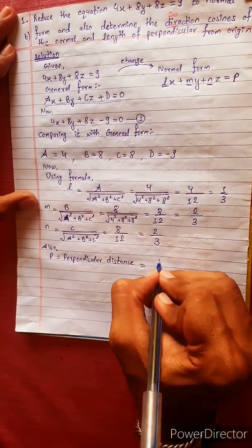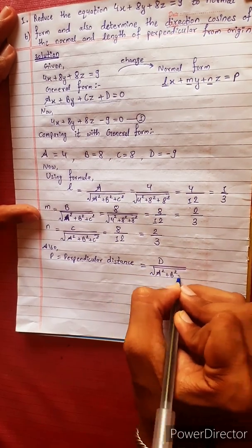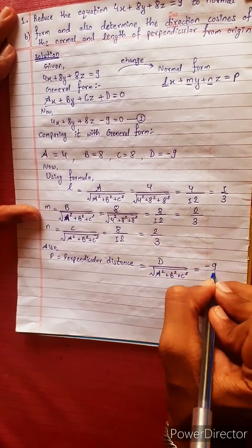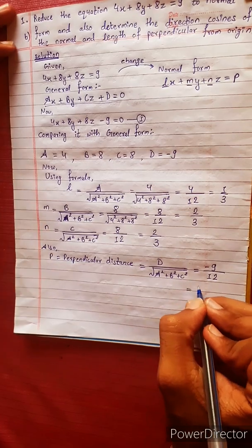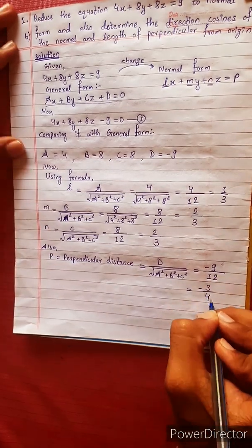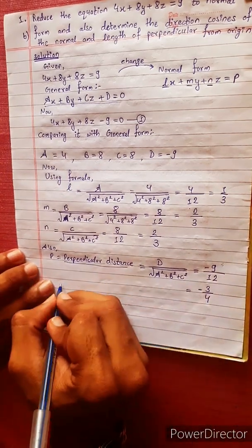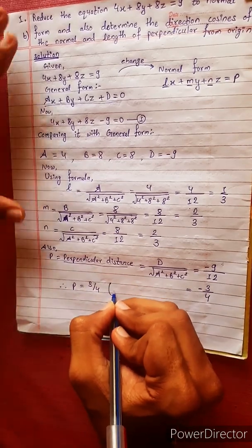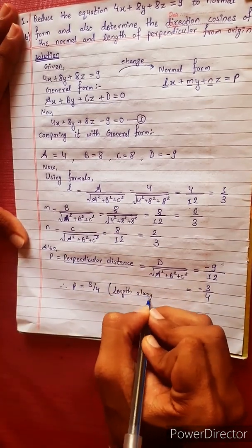The perpendicular distance formula is p = d divided by √(a² + b² + c²) = -9 divided by 12 = -3/4. Since distance (length) is always positive, p = 3/4.